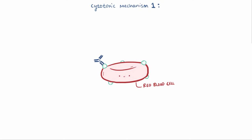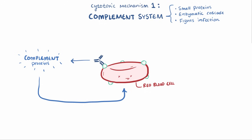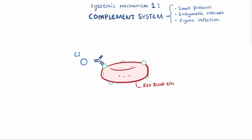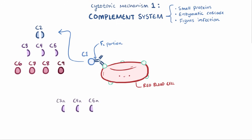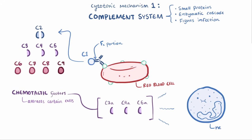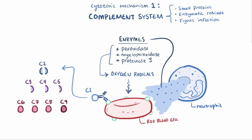The first cytotoxic mechanism of type 2 hypersensitivity is activation of the complement system — a family of small proteins that work in an enzymatic cascade to fight off bacterial infections. The IgG or IgM antibodies activate complement proteins starting with C1, which binds to the Fc portion of the antibody. C1 then engages C2 through C9, some of which are cleaved by enzymes. The cleaved fragments C3a, C4a, and C5a act as chemotactic factors that attract neutrophils. Once neutrophils arrive, they degranulate, releasing enzymes like peroxidase, myeloperoxidase, and proteinase 3, which generate oxygen radicals that are highly cytotoxic and cause tissue damage.